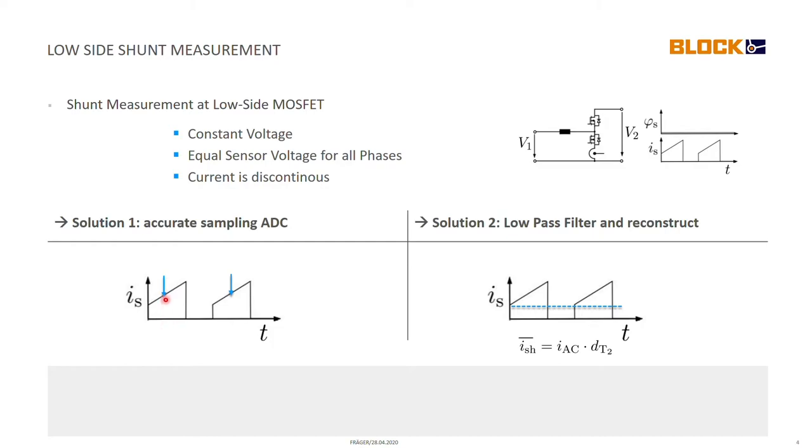However, when this time gets really small, also the time slot that is available for the sampling of the ADC and for the settling of the ADC gets really small. So we need a quite fast ADC that is then once again quite expensive.